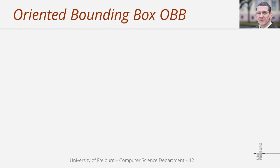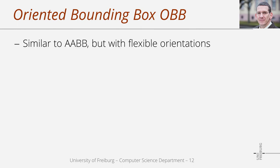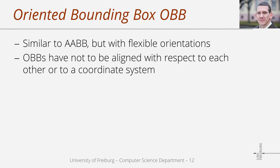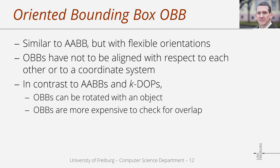The next type is the oriented bounding box, OBB. Similar to AABBs, this is a box, but the orientations of all boxes in a scenario are flexible — OBBs do not have to be aligned with respect to a common coordinate system. This is particularly interesting for rotating objects. When using AABBs or k-DOPs, boxes must be recomputed if an object's orientation changes. When using an OBB, the box can be rotated along with the object. While this is a positive property, the overlap test for OBBs is more expensive.